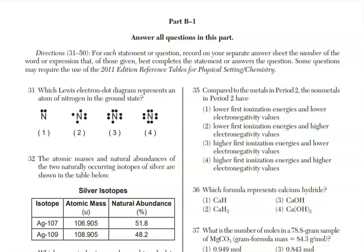In this section, we're going to go over 20 multiple choice questions from the June 2023 Regents exam. This is part B-1 with question 31, which Lewis electron dot diagram represents an atom of nitrogen in the ground state?